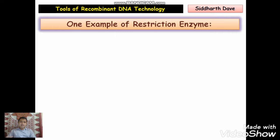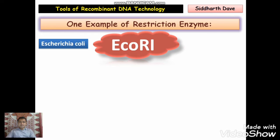Now let us discuss one example of a restriction enzyme. The example we are taking is an enzyme isolated from Escherichia coli bacteria, whose name is EcoRI. This is one example of a restriction enzyme — EcoRI — which is isolated from Escherichia coli bacteria, which we normally call E. coli.